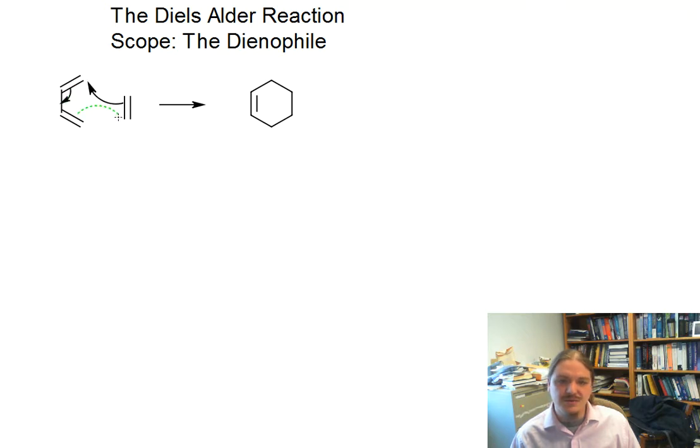It never hurts to show the mechanism a couple of times. And as I shared in the introductory video on this reaction, clockwise or counterclockwise, the direction of the arrows doesn't matter here. And just for reminders, this first piece is a diene, and it's this second alkene that's the dienophile.